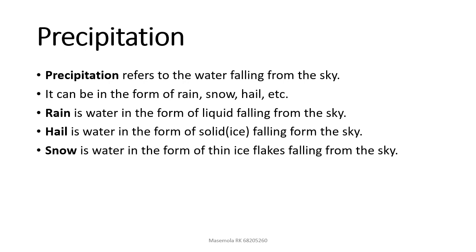Precipitation — what is precipitation? Precipitation refers to water falling from the sky. It can be in the form of rain, snow, hail, etc. Rain is water in liquid form falling from the sky — it can be heavy or light drizzle. Hail is water in the form of solid ice falling from the sky. Snow is water in the form of thin ice flakes falling from the sky. With hail, it can hit you on the head and it will hurt you, but snow is so thin and so light that it won't hurt you when falling from the sky.